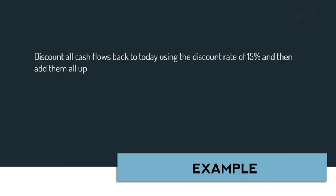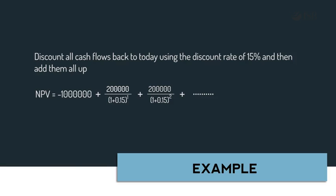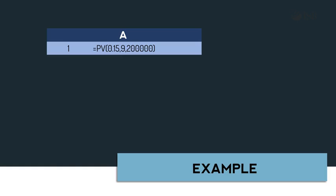To calculate the NPV of this project, we need to discount all cash flows back to today using a discount rate of 15%, and then add them all up including today's initial investment of $1,000,000. The NPV is hence: minus $1,000,000 plus $200,000 divided by (1 + 0.15)^1, plus $200,000 divided by (1 + 0.15)^2, and so on until $200,000 divided by (1 + 0.15)^9. Ignoring the initial investment, the annual cash flows of $200,000 form a 9-payment ordinary annuity.